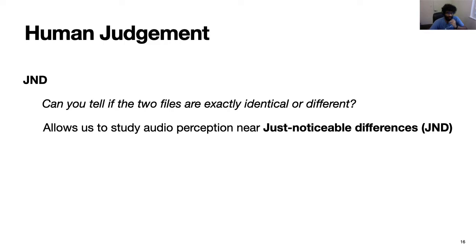We follow the strategy of just noticeable difference, JND, where we show a reference and a distorted signal and ask a very simple question. Are these two recordings exactly identical or different? This allows us to study human perception near JND, which is an important task in various audio problems. For example, in cases where we would like to enhance the audio quality as perceived by a human.